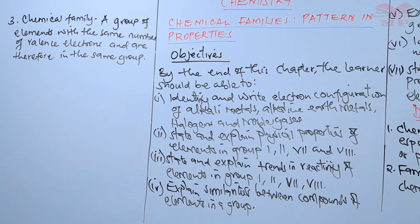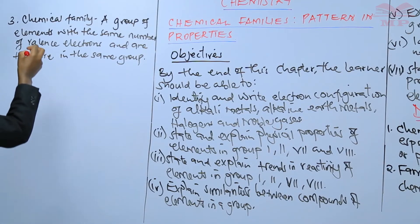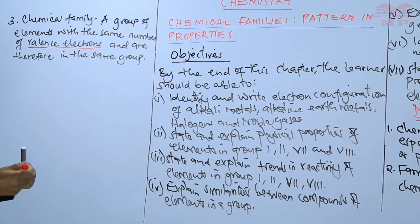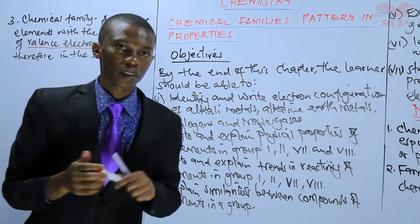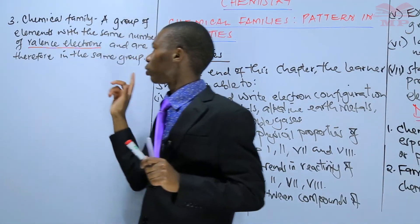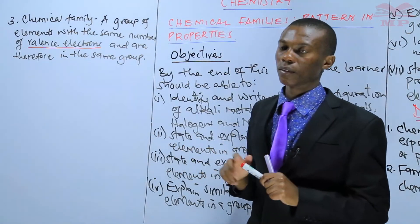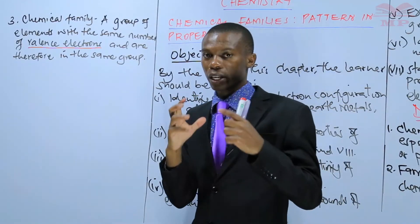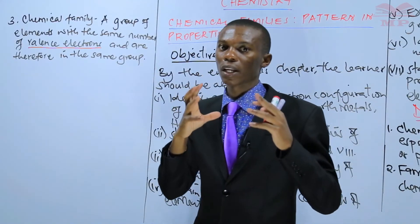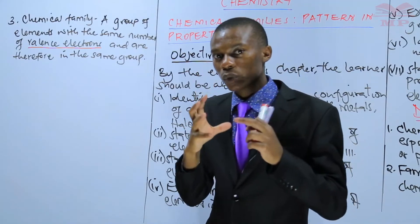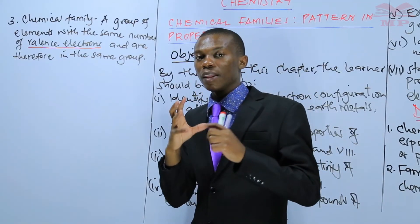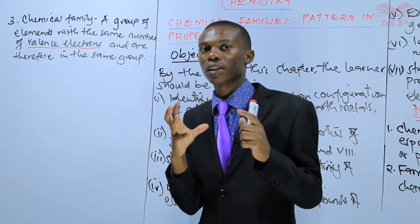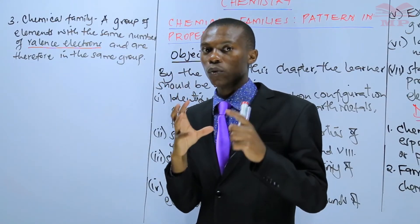When we talk about valence electrons, valence electrons means the number of electrons in the outermost energy level. So a chemical family is a group of elements with the same number of electrons in the outermost energy level, and therefore they are found in the same group.